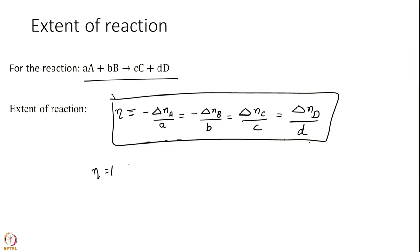Eta equal to 1 implies a moles of A are consumed, b moles of B are consumed, c moles of C are produced. It is an easy way to think about it.